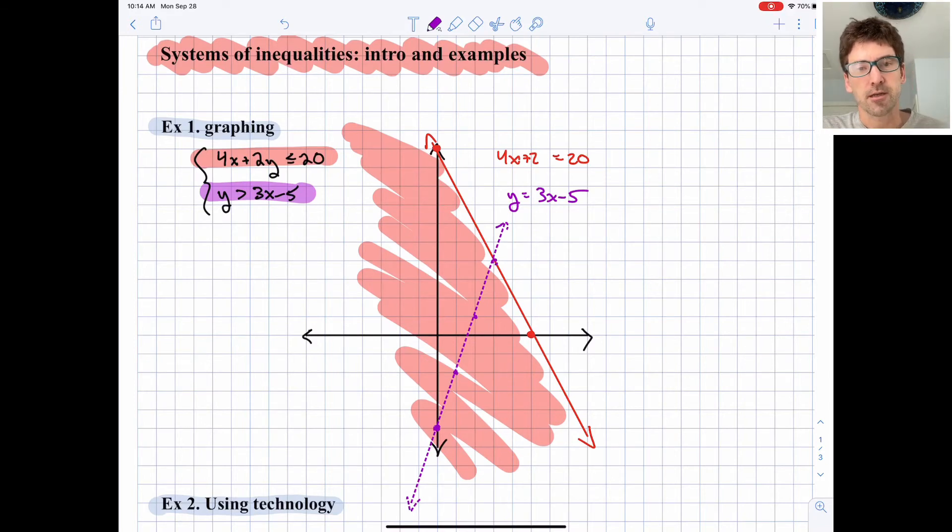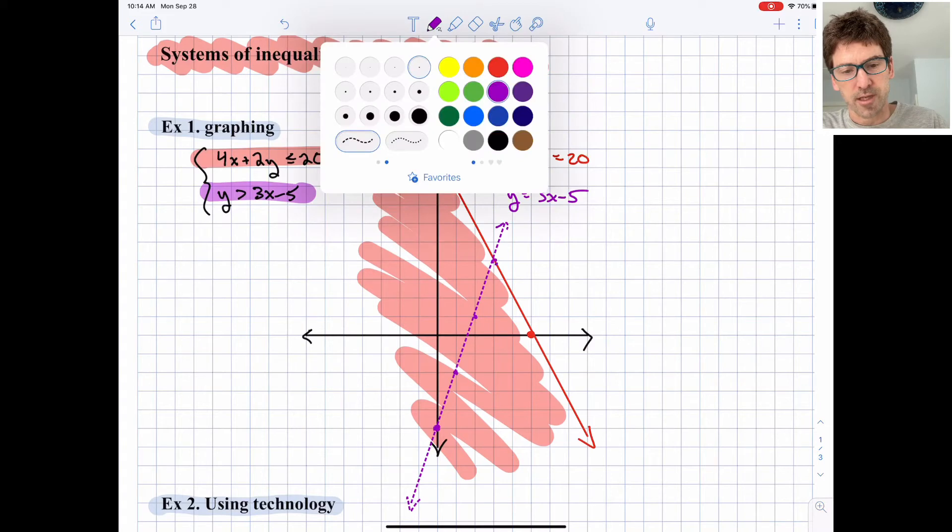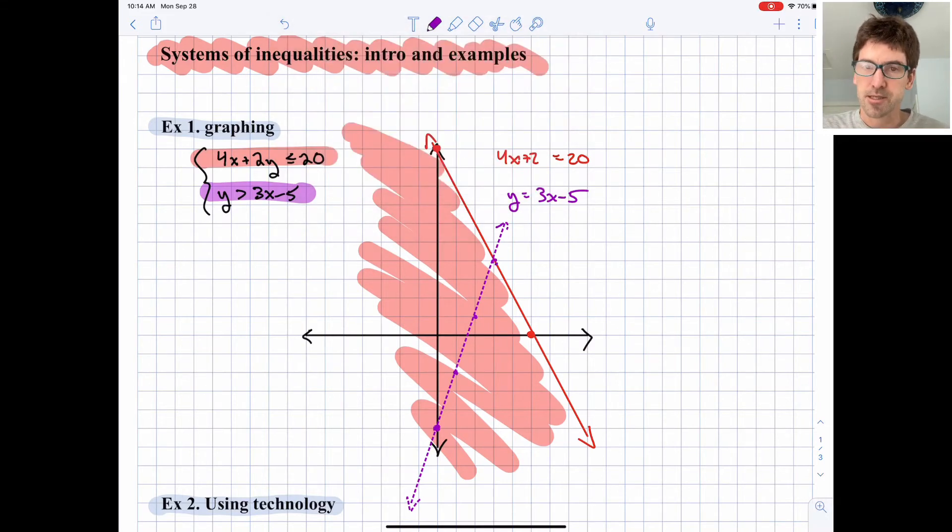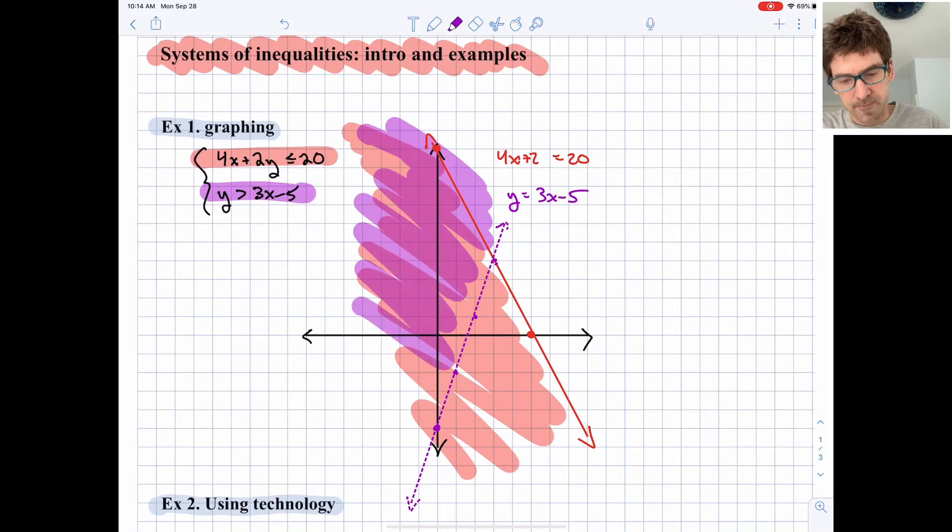That is a dashed line because y is strictly greater than 3x - 5. The points on the actual boundary line are not valid solutions of the inequality. Let's think of which side to shade and plug in (0, 0) once again. Is 0 > 3(0) - 5? Once again it is. So we'll shade the side of my boundary line that includes (0, 0).